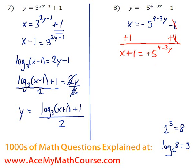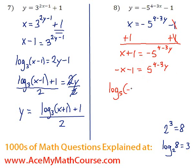I'm going to divide both sides by negative 1 to get rid of the negative, giving negative x minus 1 equals 5 to the power of 4 minus 3y. Now I'll rewrite this equation in log form: the base 5 becomes the base of the log, negative x minus 1 stays as the argument, and that equals 4 minus 3y.